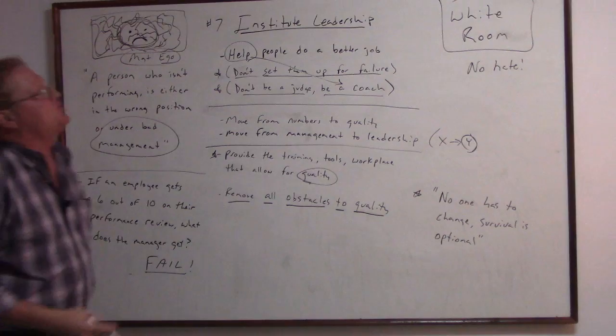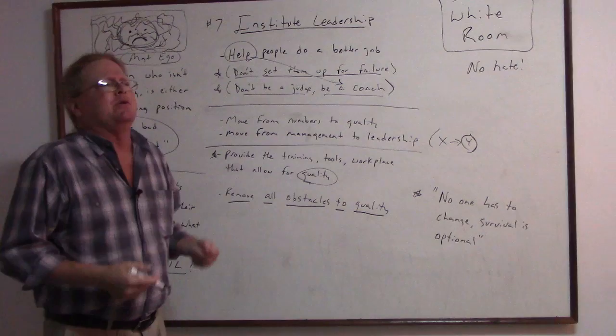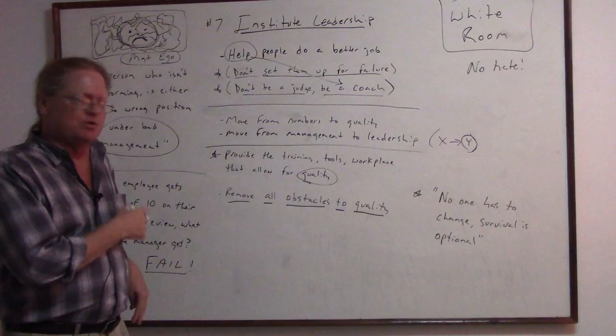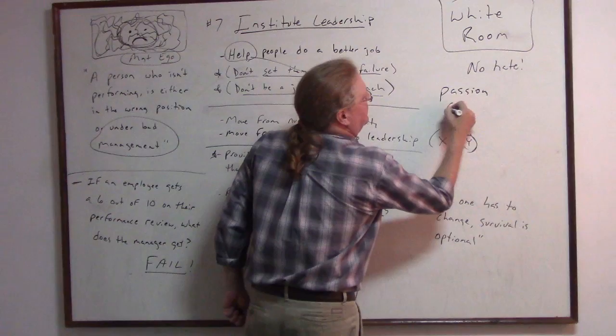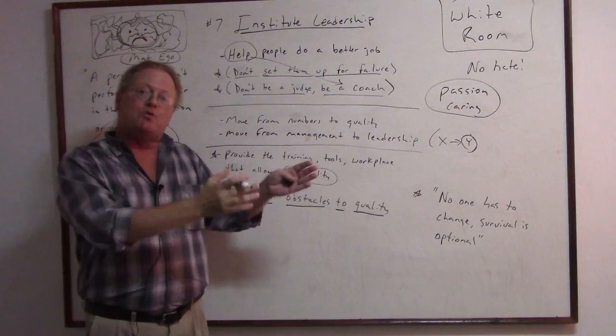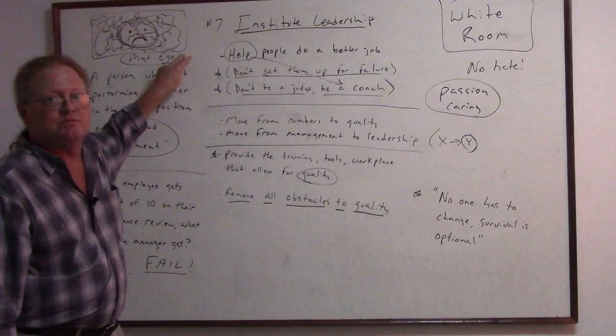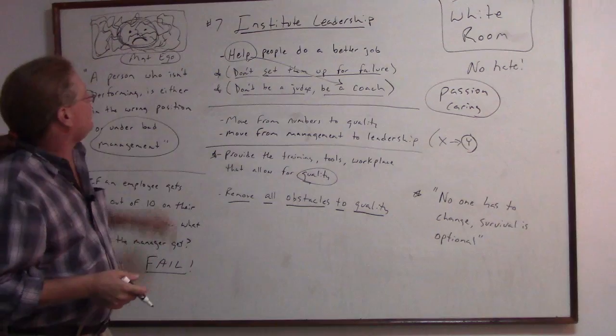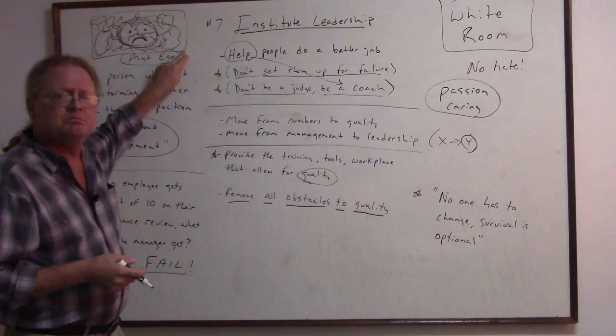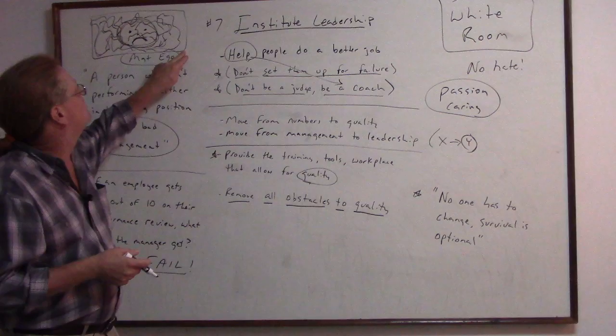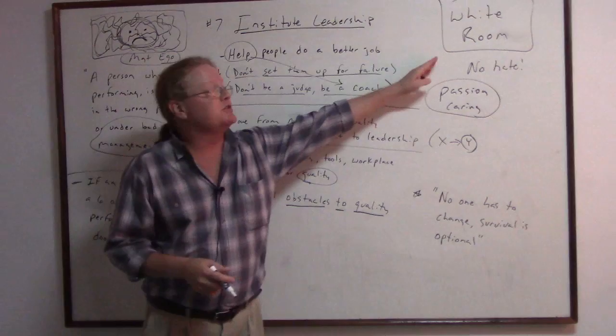So there we go. Institute leadership. Move from management over to leadership. Help people. Feed into that intrinsic motivation. Stop relying on the extrinsic motivators. Yeah, get passion. Passion and caring. No hate. And now we got the ship going in the right direction. These people, I don't know how they're still in business. There's a lot of businesses out there that look like they're doing well, but they're really not. Are we going to have any volunteers over here? Any passion? Any caring? No. It's hard to have that when you have fear in the building as well. So, no one has to change. Survival is optional. If your competition is over in the white room and your place looks like this, good luck.